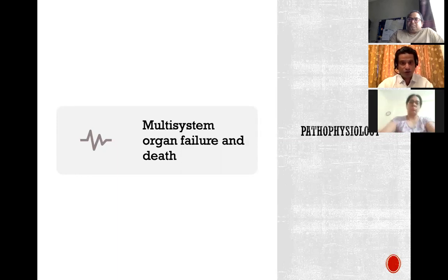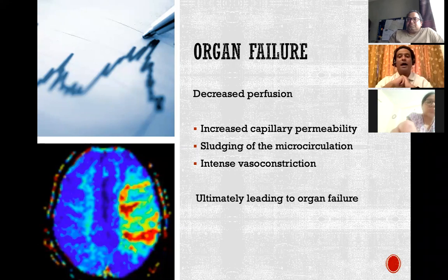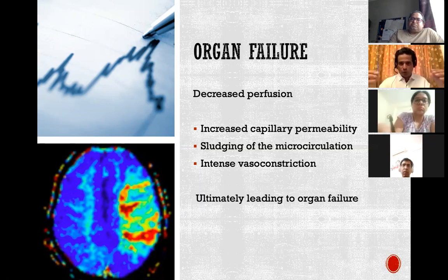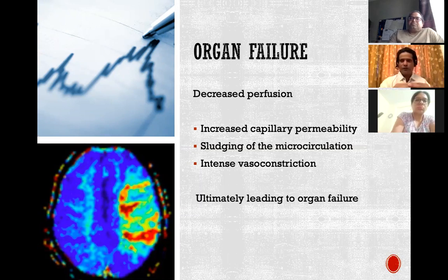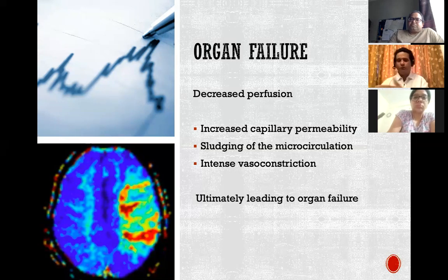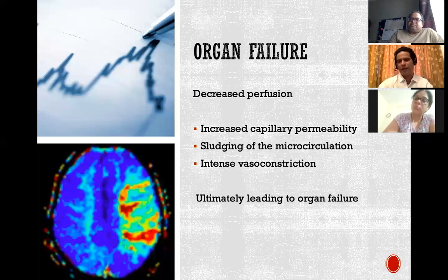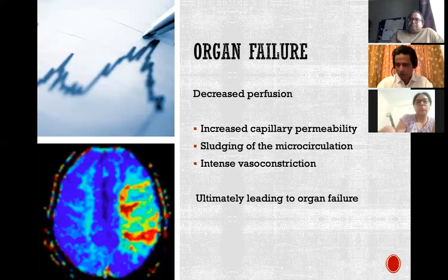This leads to the worst phase of shock: organ failure. Decreased perfusion causes capillary permeability to increase, so water from blood vessels moves out into tissue. This produces sludging of the microcirculation because there isn't enough fluid for circulation to take place, further preventing organ perfusion. At the same time, compensatory intense vasoconstriction occurs — the body thinks it needs pressure, whereas what is actually required is flow. Vasoconstriction also impedes flow, and all of this ultimately leads to organ failure.